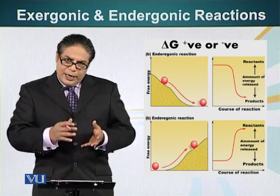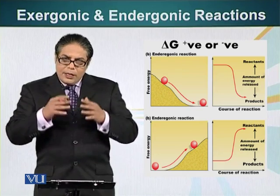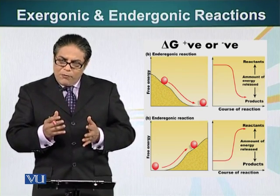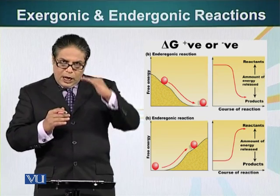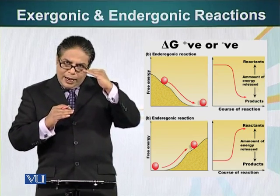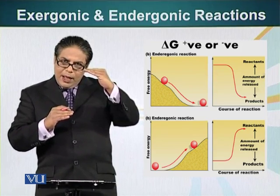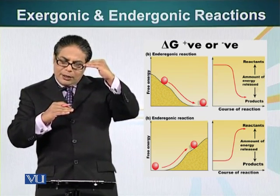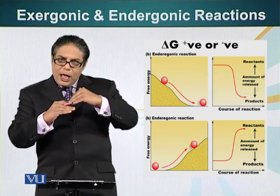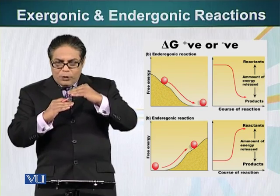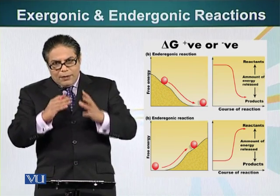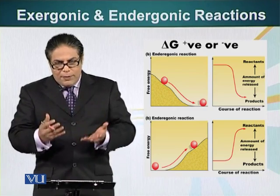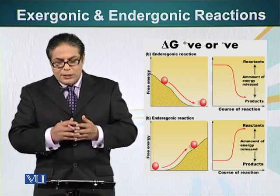If we use this analogy to understand reactions, there are two types. In one type, the reactants are at a higher energy level, and when the reaction occurs and reactants are converted to products, the products are at a lower energy level. So energy is released from the system — these are exothermic or exergonic reactions.